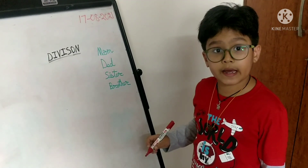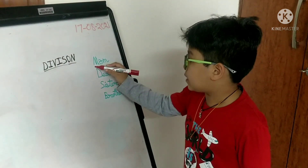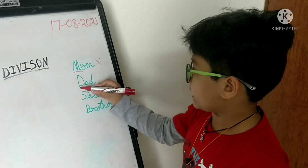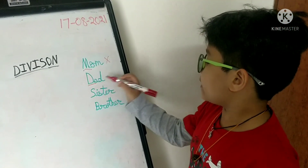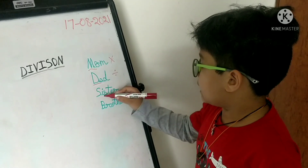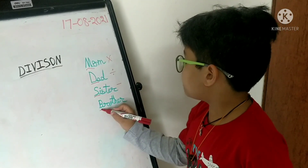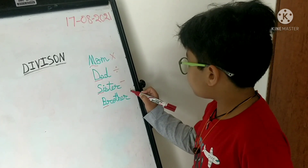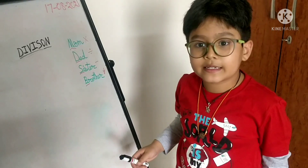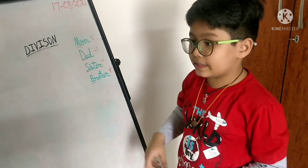The ways which I have for division are: Mom, which stands for multiplication; Dad, which stands for division; Sister, which stands for subtraction; Brother, which stands for bring it down. Let's start with an example and see how easy it is by using these.